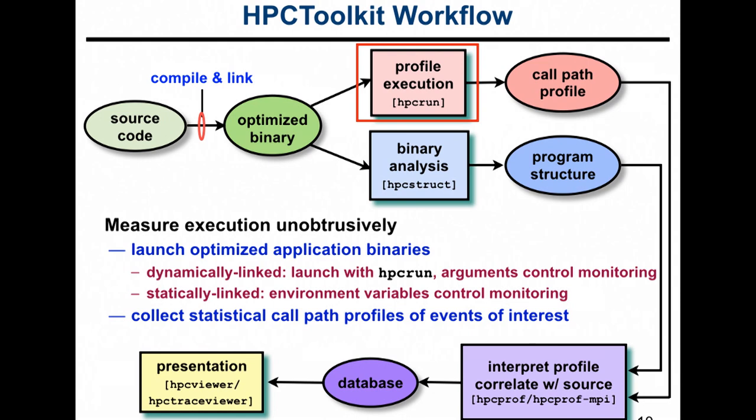The second step is profiling the execution. You launch your optimized application binaries. For dynamically linked binaries, you launch with our script HPC run — saying 'hpcrun my_application' or 'mpirun hpcrun my_application', however you launch MPI, whether via Slurm or Cobalt. For statically linked binaries on Mira and Theta, you use statically linked binaries, so you don't use our launcher script — instead all settings to control monitoring are passed as environment variables.